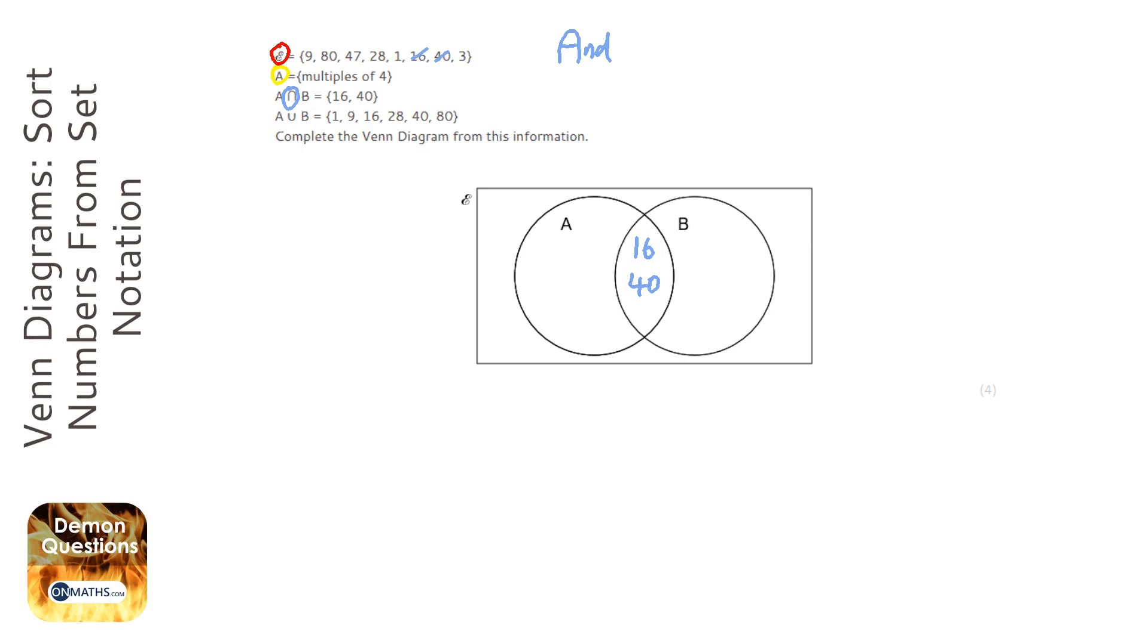And actually we can have a look and see which other multiples of 4 are in that list. So 80 is a multiple of 4, so that's going to go in A. And 28 is a multiple of 4, so that's going to go in A as well. I think that's it.